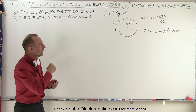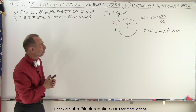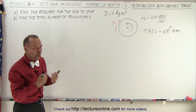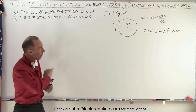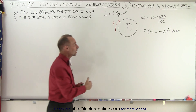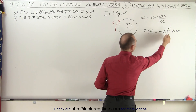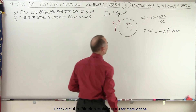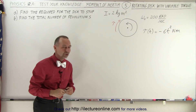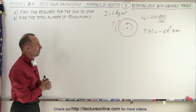It's rotating at an angular velocity of 200 radians per second, and there's a torque applied in the opposite direction, slowing the disk down. The torque is dependent on time: it is minus 6t squared newton-meters, and the moment of inertia of the disk is 2 kilogram meters squared.